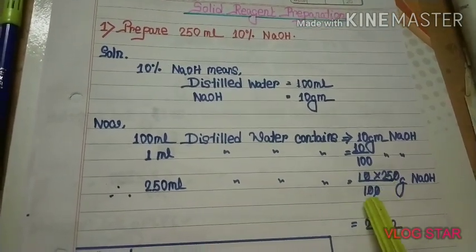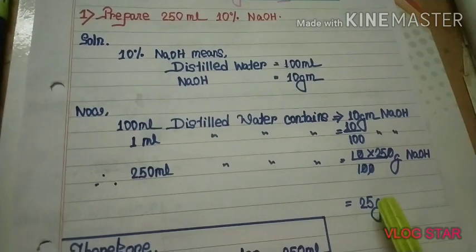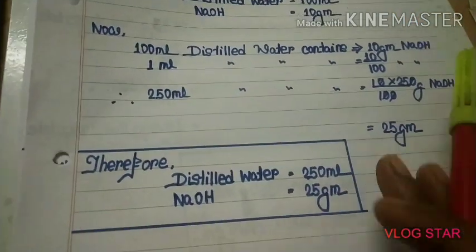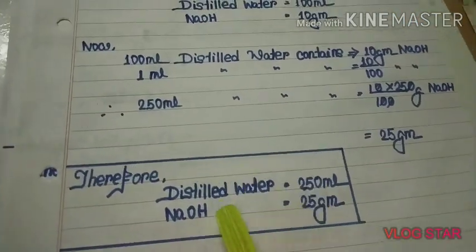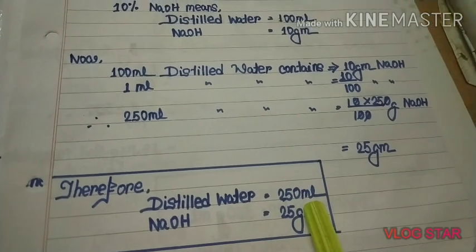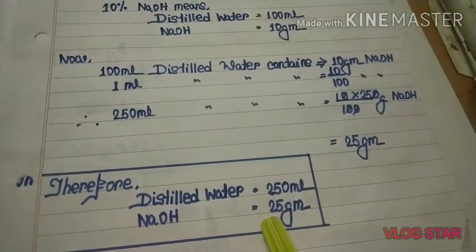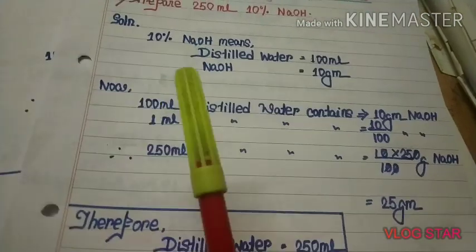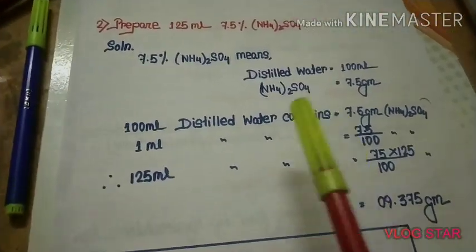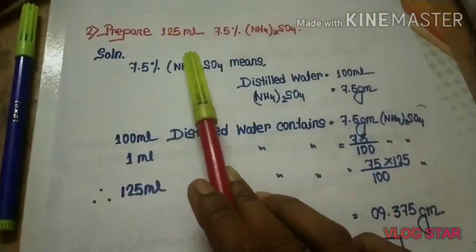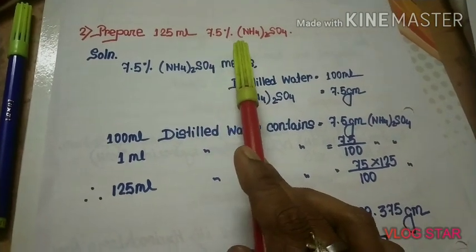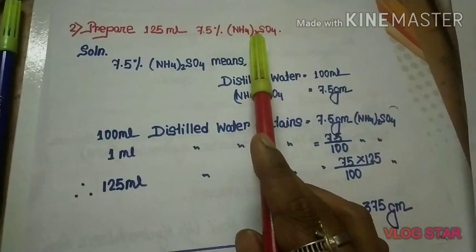250 ml distilled water contains (10 × 250)/100 grams of NaOH, which equals 25 grams of NaOH. Therefore: distilled water = 250 ml, NaOH = 25 grams.